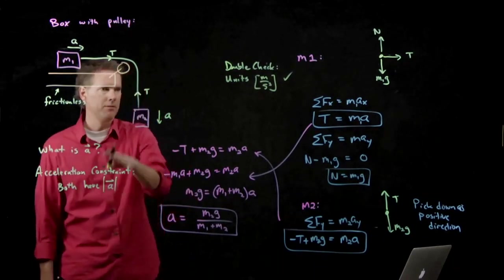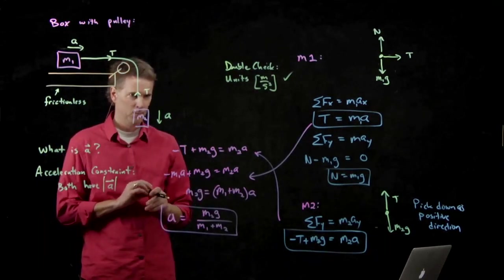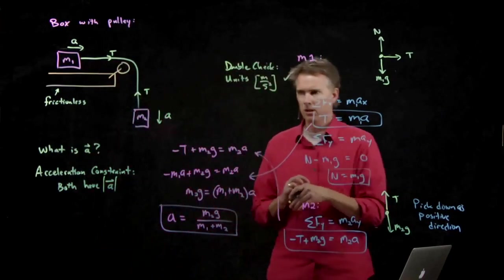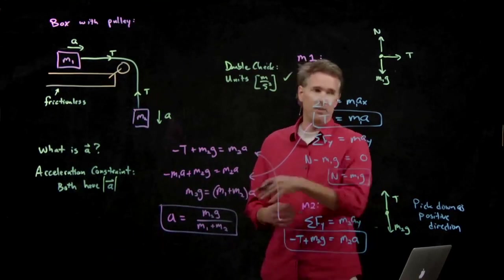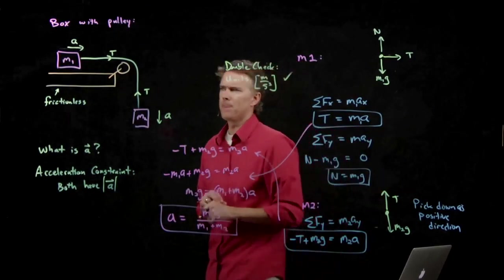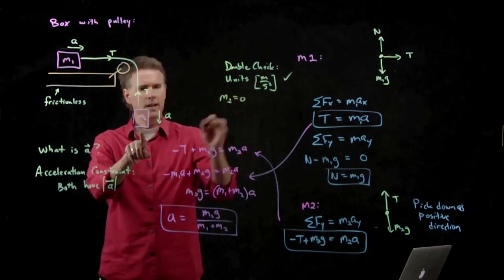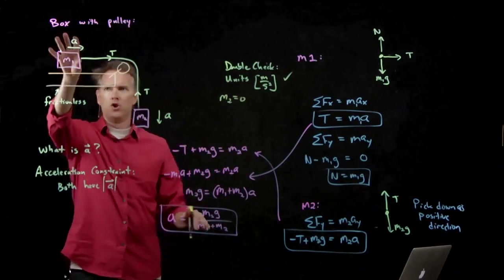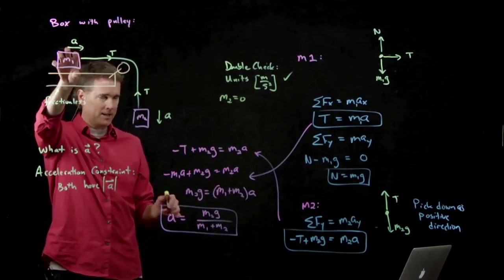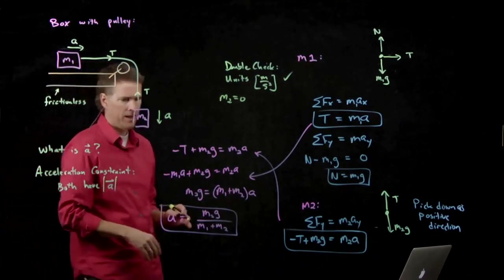What are the limits? What limits should we look at in this answer? Limits always mean let something go to zero or let something go to infinity. What should we let go to zero? How about M2? If M2 is zero, should this block move at all? If I just have a block sitting on a table and I don't hang anything from it, M1 shouldn't move at all. Is that what happens?